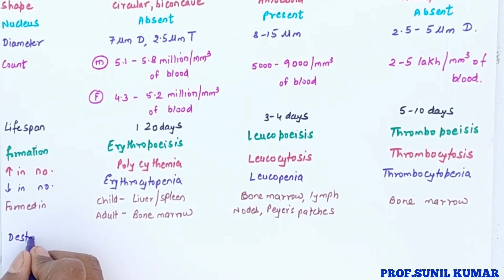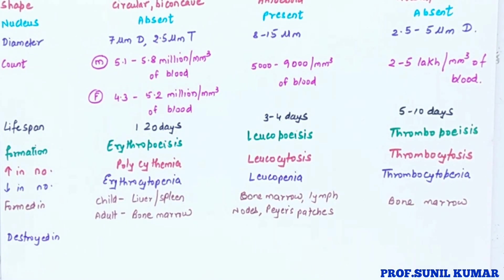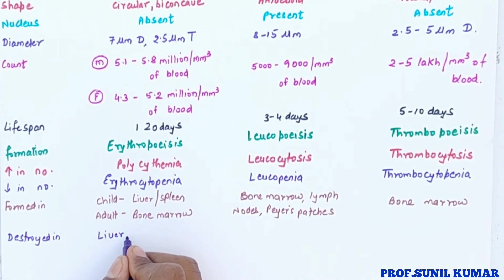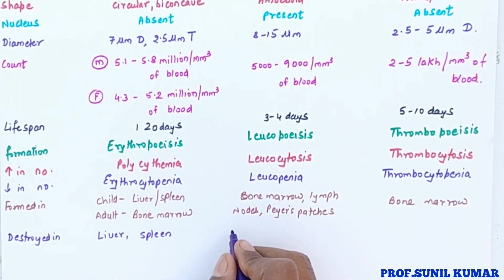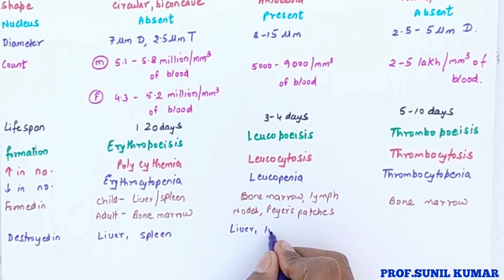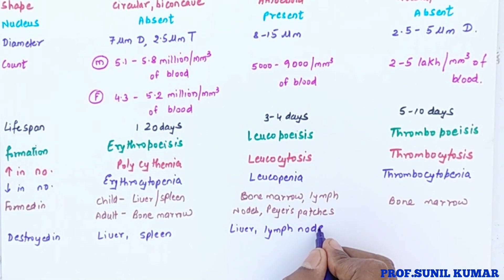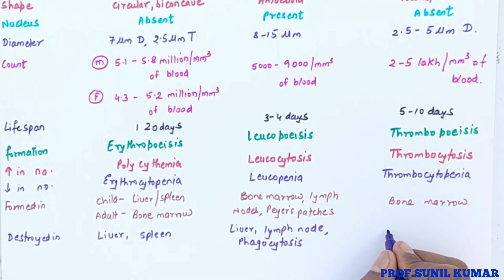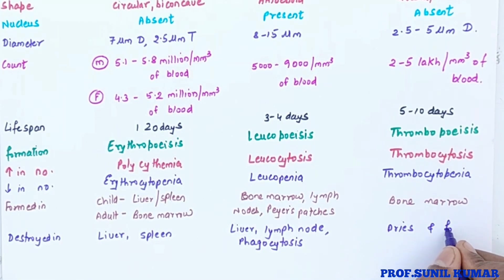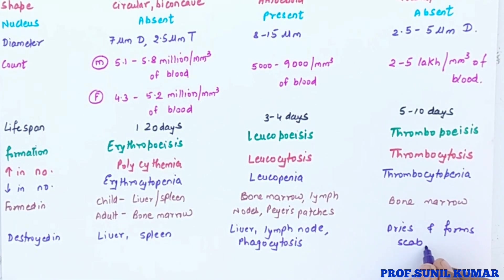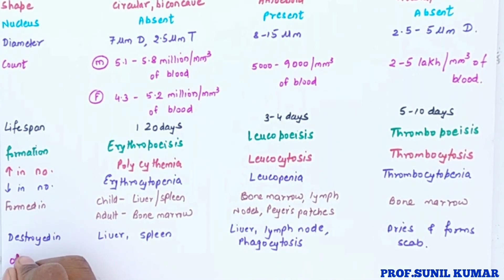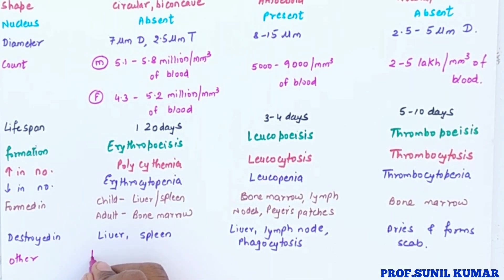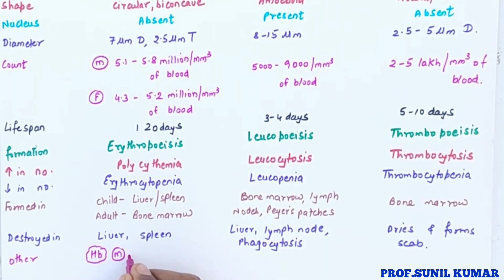Once the lifespan is over, where do blood cells get destroyed? All RBCs are destroyed in the liver or spleen — the spleen is regarded as the graveyard of RBCs. WBCs are destroyed in the liver, lymph nodes, or by phagocytosis — 'phago' means solid and 'cytosis' means engulfment. Platelets dry up and form a scab.